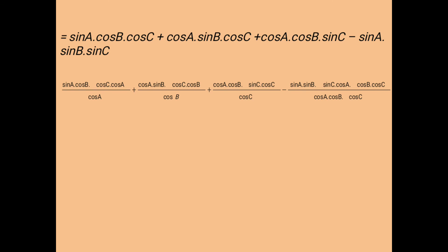After copying the same expression as before, we move to the next step using the most important trick that will lead us to the answer. Here, the first term is multiplied and divided by cosA, the second is multiplied and divided by cosB, the third is multiplied and divided by cosC, and the last term is multiplied and divided by cosA·cosB·cosC.